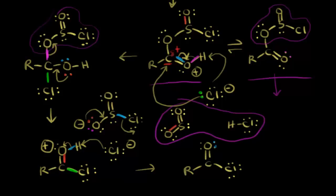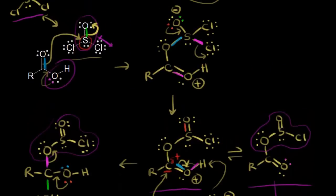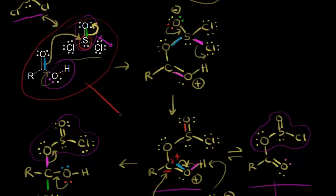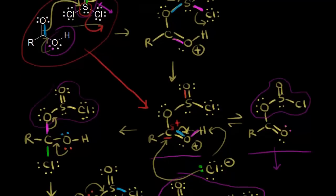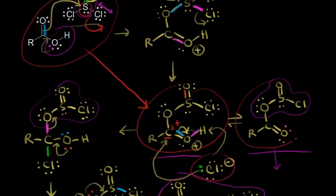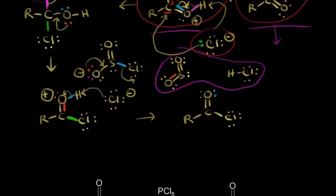That was a long mechanism, and you'll see some slight variations on it. You could show the nucleophile attacking the electrophile and, as the nucleophile attacks the sulfur, have these electrons kick off onto the chlorine to form the chloride anion at that step directly. Depending on which textbook you look in, you might see some slight variations on this mechanism.